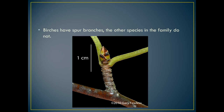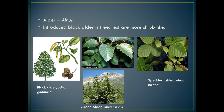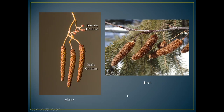Moving on to the alders — their scientific genus name is Alnus. The introduced black alder is more tree-shaped whereas the rest are more shrub-like, as you can see with the green alder. Again their leaves are alternate with teeth around the edges. Here is a comparison of alder and birch catkins — the female catkins on alders are very small, looking like tiny pine cones in a cluster, whereas the female catkins on the birch are much larger. This is a good distinguishing factor between the two groups.